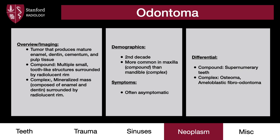An odontoma is a neoplasm that is a mixture of enamel, dentin, cementum, and pulp tissue — all the different elements of a tooth. There are two varieties. The compound odontoma refers to multiple small tooth-like structures surrounded by a radiolucent rim. The complex form is also surrounded by a radiolucent rim, but the center is a mineralized mass composed primarily of enamel and dentin. These lesions are often asymptomatic, and usually found when investigative radiography is done because a tooth has failed to erupt. Odontomas are more commonly found in the second decade of life, and more common in the maxilla than the mandible. The differential includes supernumerary teeth, osteomas, and ameloblastic fibroadontomas.